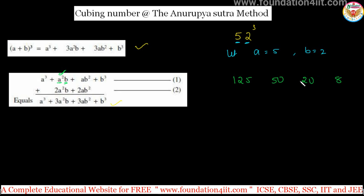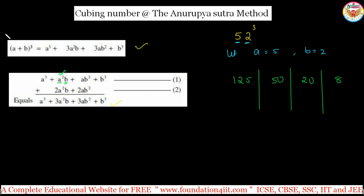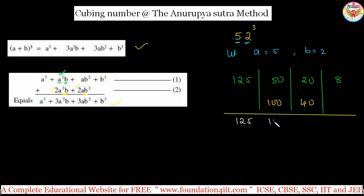This one line we can write quickly — first number cube in the first place, last number cube in the last place, and the two middle terms in between. Next, to get the second-row values, double the middle two numbers: 50 doubled is 100, and 20 doubled is 40. This is because we multiply a²b by 2 and ab² by 2 as in the formula. Now add: 125 stays as is, 50 + 100 = 150, 20 + 40 = 60, and 8.